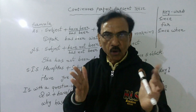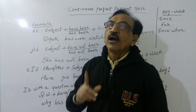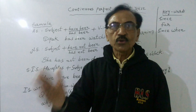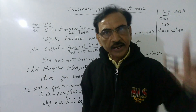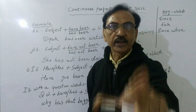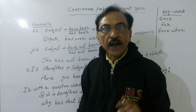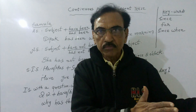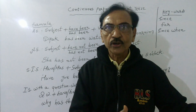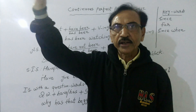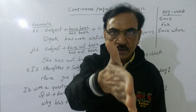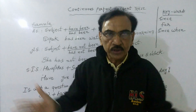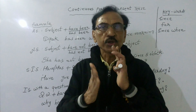Just to make it more clear, I will give you one example: 'I have been learning English since 2040.' So when did I start learning English? I started learning English in 2040. At present I am learning English. Until the moment I become confident, I may continue learning English. So I started learning English in the past, at present I am learning English, and I may continue learning English in the future. For denoting this kind of idea, we have to use continuous perfect present tense.